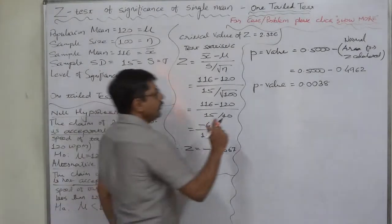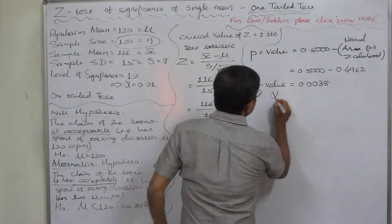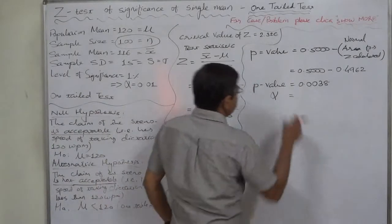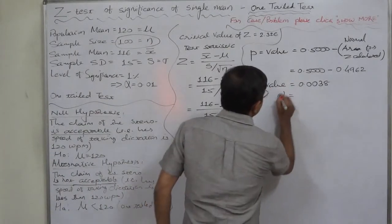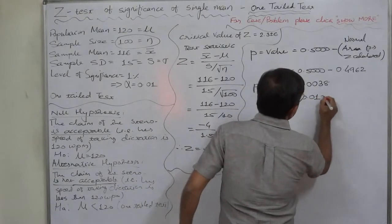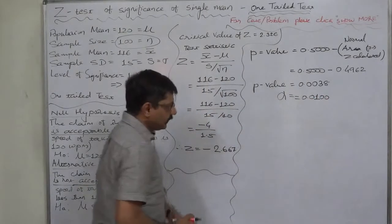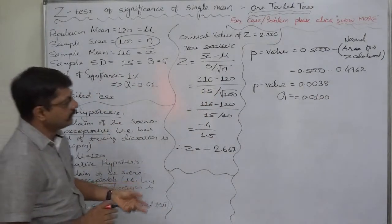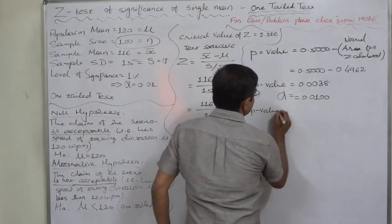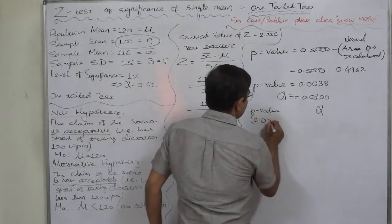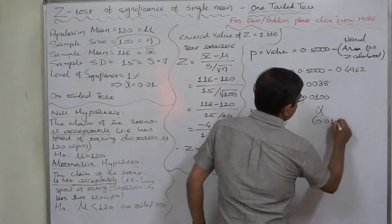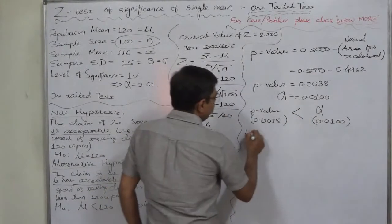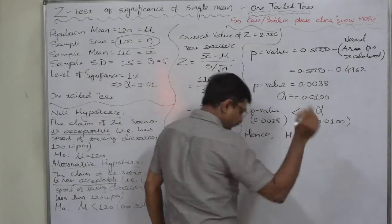Now we need to compare p-value with alpha in case of one tail test, and with alpha by 2 in case of two tail test. This is one tail test, so we need to compare it with alpha, and alpha is 0.01. That means this is something like comparison between 38 and 100. And here, if the p-value is less than alpha, then we reject the null hypothesis.